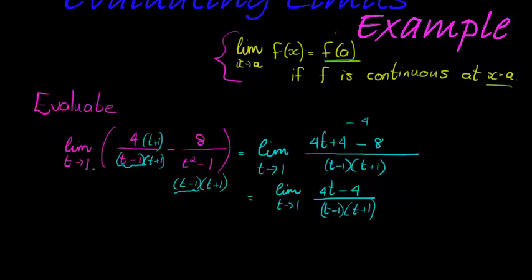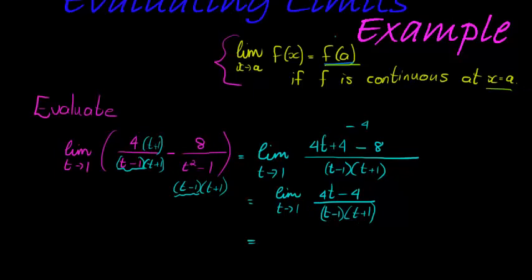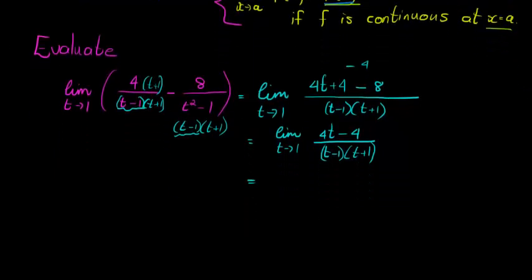We see we still actually have a problem. We still can't substitute 1 in here because 1 minus 1 will give me 0, 0 times whatever this bracket simplifies to would be 0 in the denominator, so I still can't substitute. But can I factorize any further, or can I simplify any further? There indeed I can.